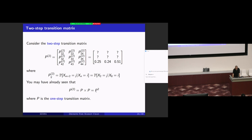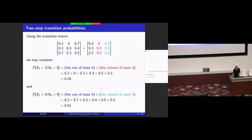The two-step transition matrix is just the one-step matrix times the one-step matrix. In other words, if P is the one-step transition matrix, then P squared — P times P — is just the two-step transition matrix. This is a matrix multiplication, not entry-wise multiplication. For example, this entry should be the fourth row times the fourth column. If you cannot remember how to do matrix multiplication, you'll have to go back to your linear algebra textbook.